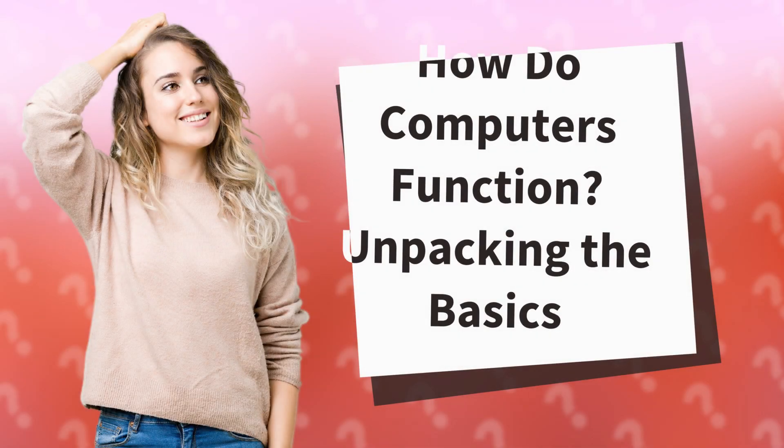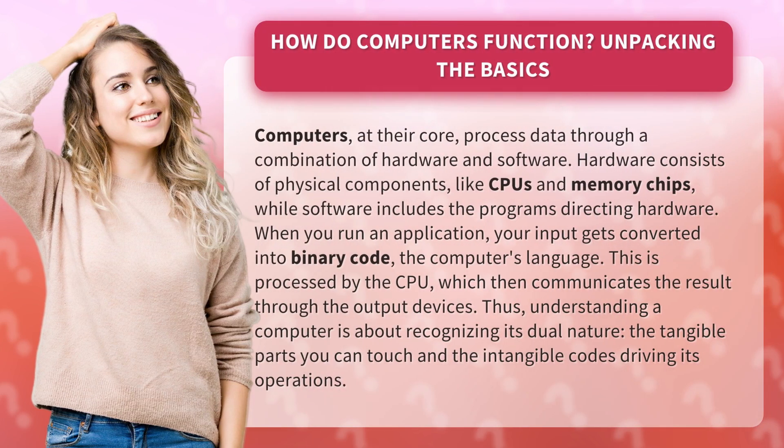How do computers function? Unpacking the basics. Computers, at their core, process data through a combination of hardware and software. Hardware consists of physical components, like CPUs and memory chips, while software includes the programs directing hardware.